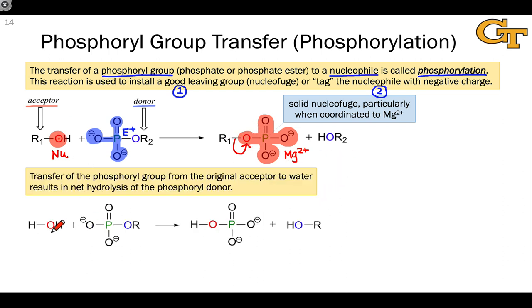When the phosphoryl group is transferred to water, the net result is the hydrolysis of the phosphoryl group donor, say in the first step. We end up with a phosphate molecule, that's here, we can just abbreviate this as PI, and a neutral alcohol, HOR.